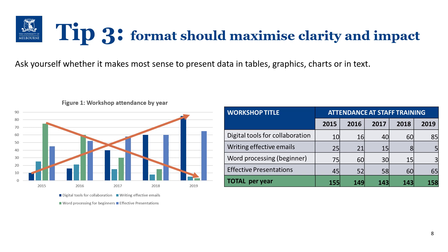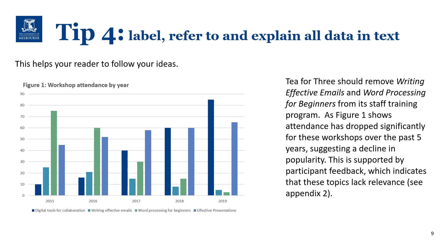Tip number four: label, refer to and explain any data in text. You should also make sure that you place the data and the text close to each other — for instance, don't have a table on page three that you only refer to on page six. In this example, you can see that the chart is labelled, referred to clearly in text, and then explained rather than described. A common mistake is to simply describe the content of a chart or table in text, but this does not add any value or meaning. Instead, use language that indicates analysis — such as 'dropped significantly' — interpretation — such as 'suggesting a decline' — and implication — such as 'indicating that these topics lack relevance.' This is really important in helping your reader to follow your ideas.